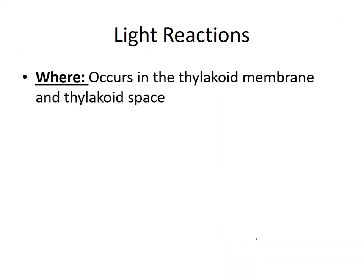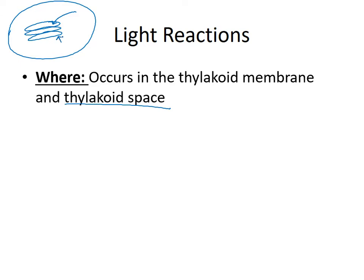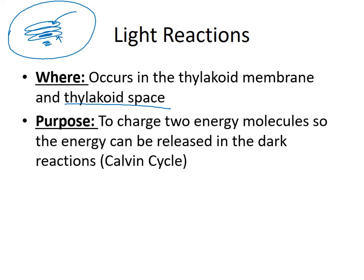The light-dependent reactions occur in those little disks called thylakoid — inside of them and across the thylakoid membranes. The thylakoid space is the area right in the middle, and the thylakoid membrane is the boundary between the interior and outside. The purpose of the light-dependent reactions is to charge two energy molecules so that energy can be moved over to the Calvin cycle and used there.